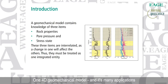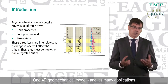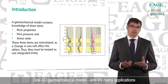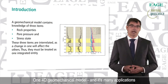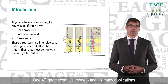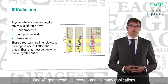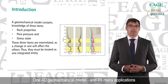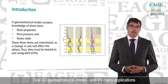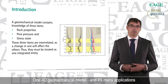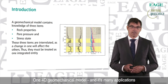What I will be talking about today is first what comprises the geomechanical model. You can see on the slide that it contains three items: firstly, rock properties; secondly, pore pressure; and thirdly, the stress state. These three items are all interrelated, as a change in one will affect the others. Thus, they must be treated as one integrated entity.